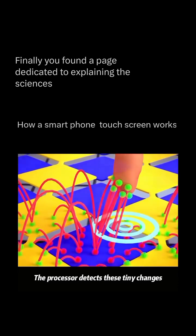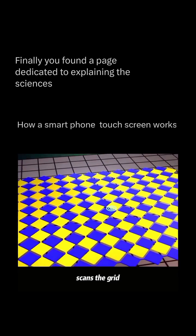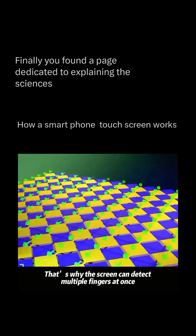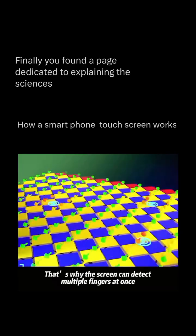The processor detects these tiny changes, scans the grid, and pinpoints the touch. That's why the screen can detect multiple fingers at once.